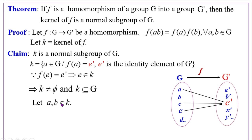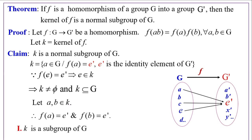Let A, B belong to K. By definition of ker(F), F(A) equals E' and F(B) equals E'. We must show K is a subgroup of G. This theorem has two parts: first, K is a subgroup of G; then we show K is normal in G. Hence we conclude K is a normal subgroup of G.